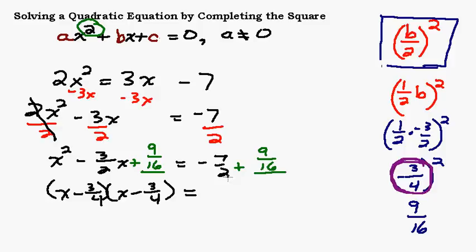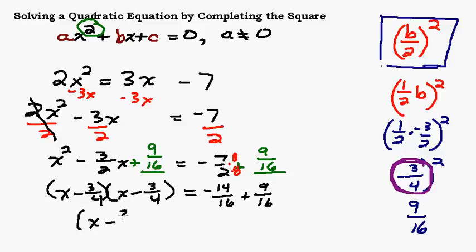On this side we're going to have to get a common denominator to add these together. A lot of times when you have a number in front of the x squared, you just end up working with a bunch of fractions. We've got to multiply top and bottom by 8 here to get a common denominator: negative 14 over 16 plus 9 over 16. On the left-hand side we have x minus 3 fourths, squared, equals negative 5 sixteenths.